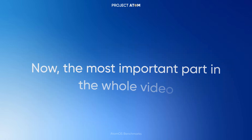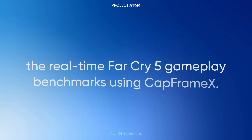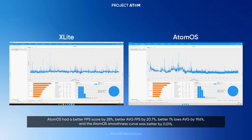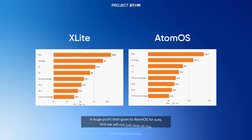Now the most important part in the whole video: the real-time Far Cry 5 gameplay benchmarks using CapFrame X. Atom OS had a better P95 score by 28%, better average FPS by 20.7%, better 1% lows average by 19.6%, and the Atom OS smoothness curve was better by 0.01%. A huge point that goes to Atom OS for sure.